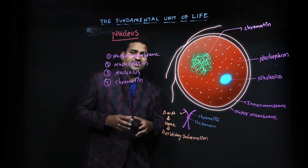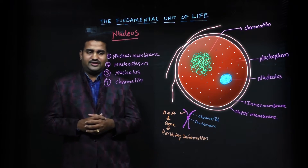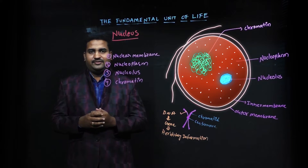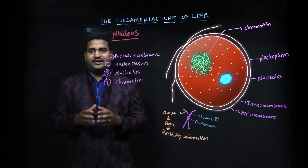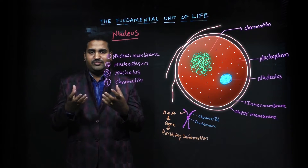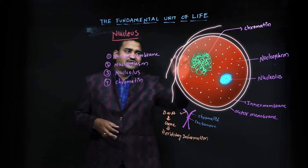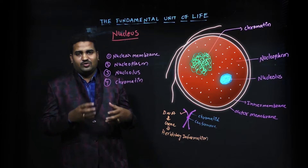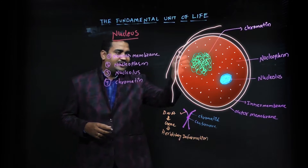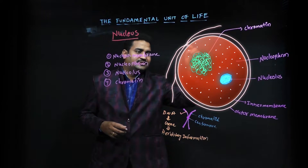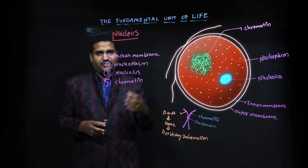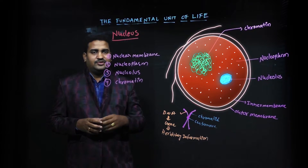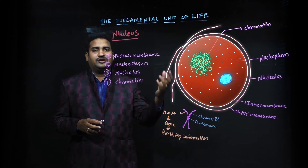Usually nucleus contains four components. One is the nuclear membrane. This nuclear membrane is a double membrane. The outer membrane is somewhat rough and it continues with the endoplasmic reticulum, and the inner membrane is very smooth. This membrane separates the cell cytoplasm from the nucleoplasm.